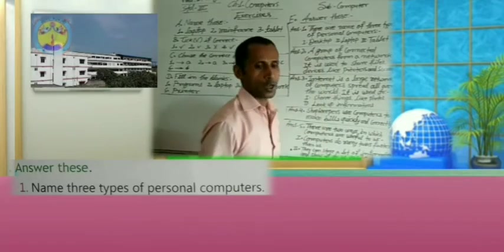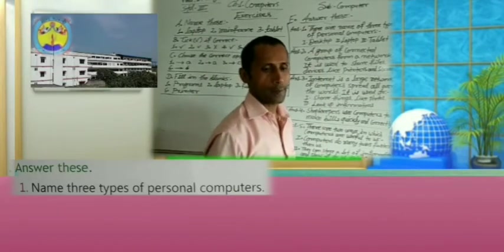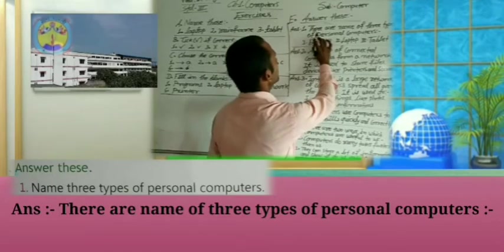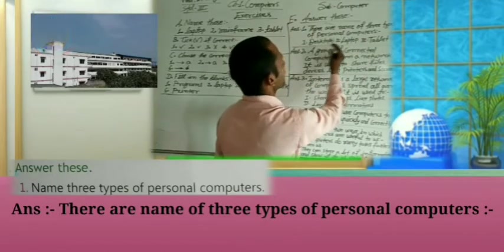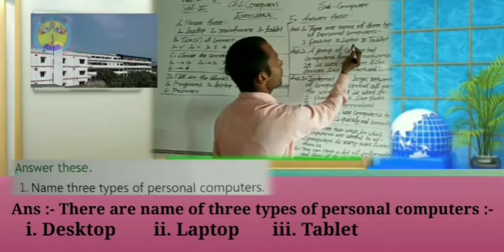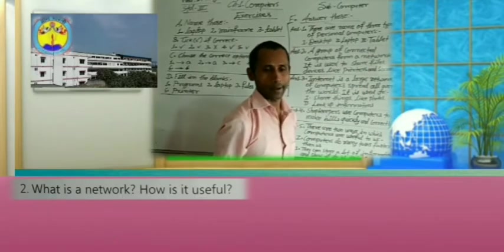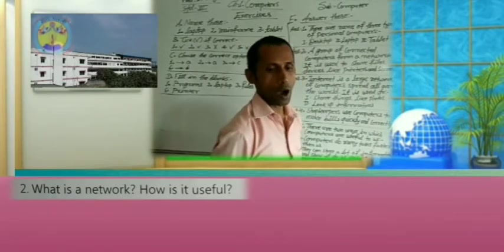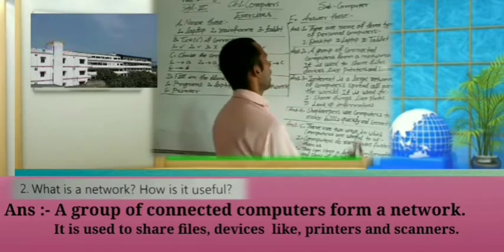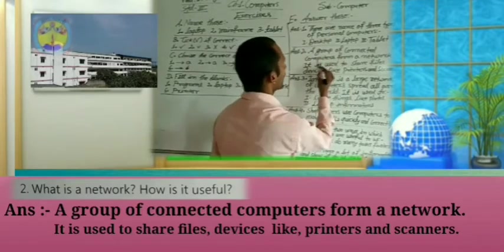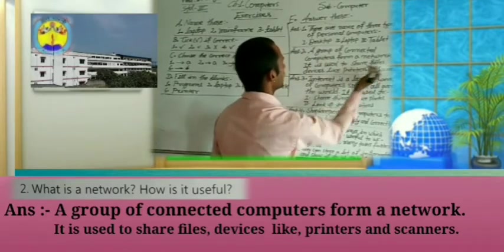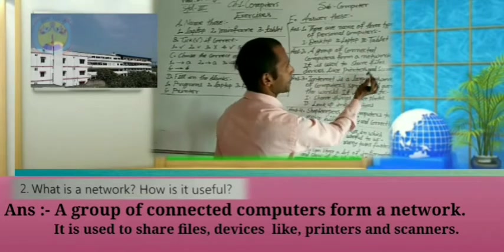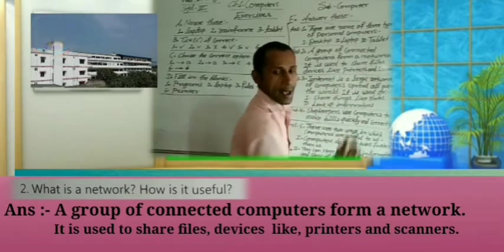Now, answer these questions. First question: name three types of personal computers. Answer: there are three types of personal computers — desktop, laptop, and tablet. Second: what is a network and how is it useful? Answer: a network is a group of connected computers. It is used to share files and devices like printers and scanners.